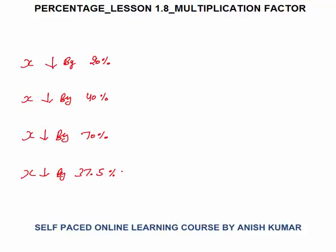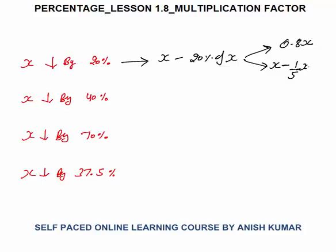Same way we will do this for decreases. X decreased by 20% means x minus 20% of x. You can write it in decimal form: x minus 0.2x equals 0.8x. Or in fraction form: x minus 1/5 x equals 4/5 x. So the multiplication factor is 0.8 or 4/5. The reverse: if x becomes 4/5 x, it automatically means there is a decrease of 1/5 or 20%.